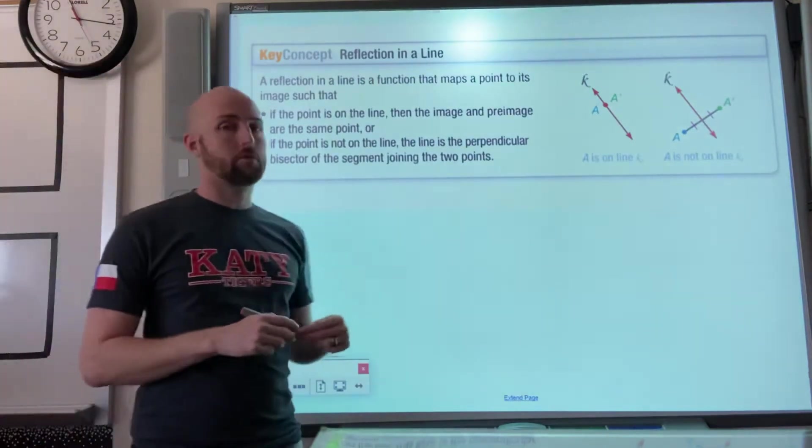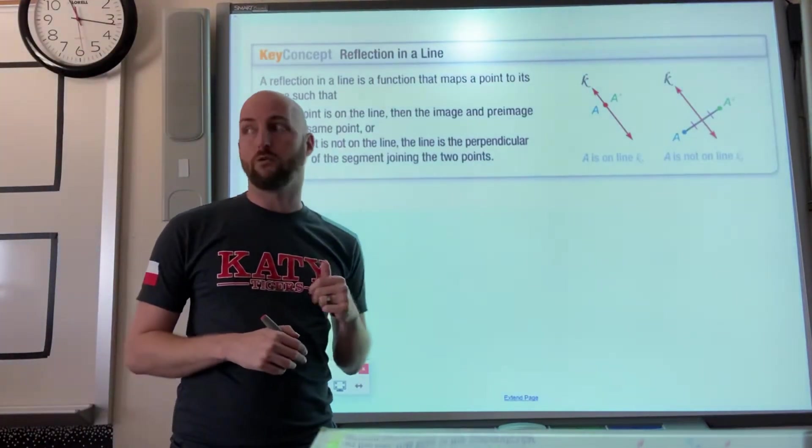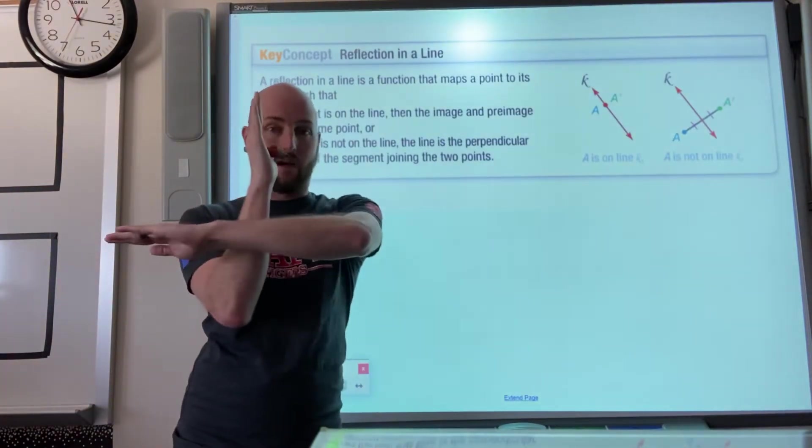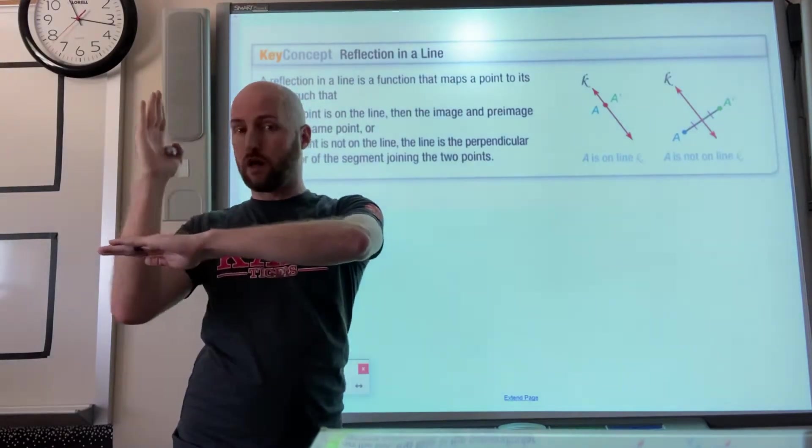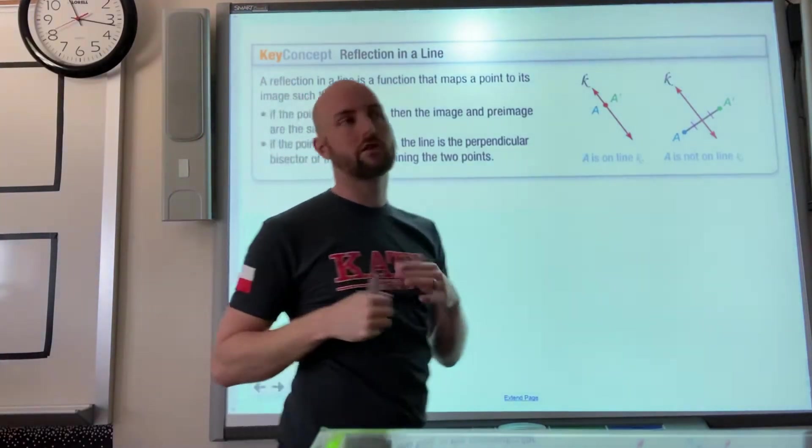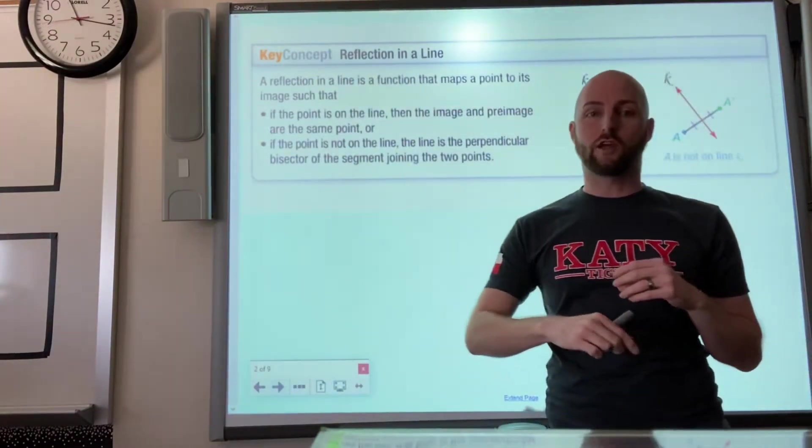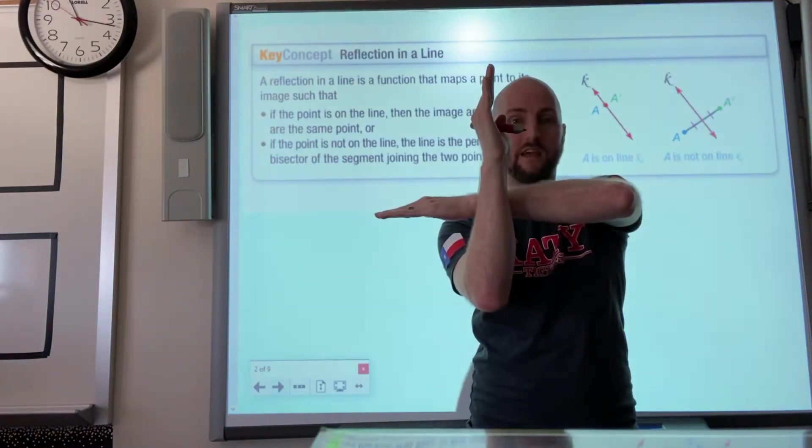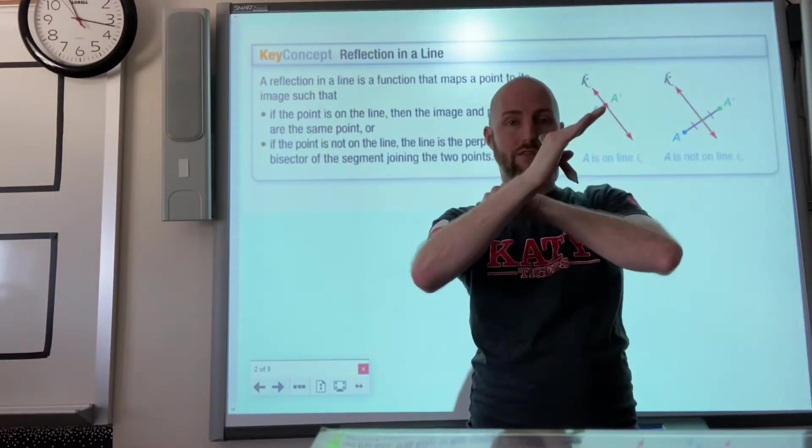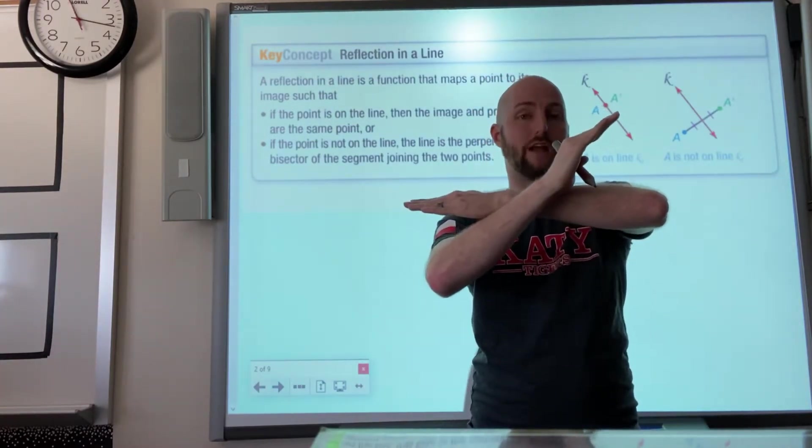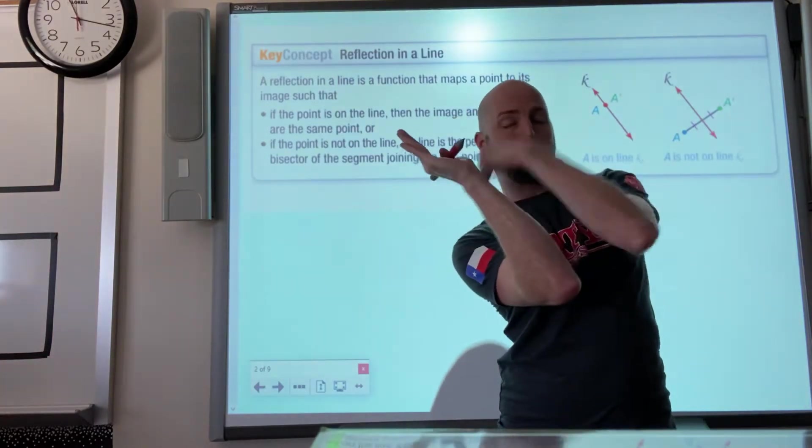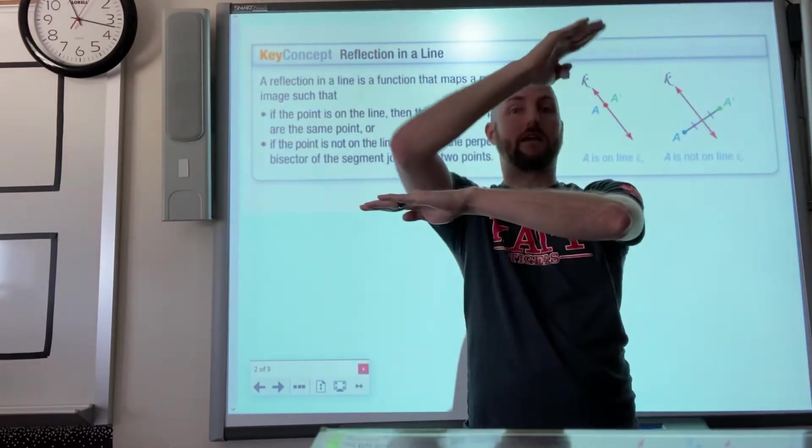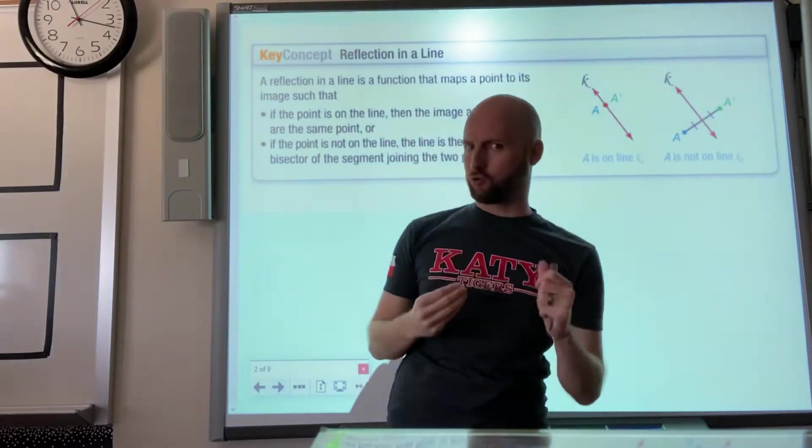All right, so reflections. We're basically going to be reflecting over specific lines. Those lines could be things like the y-axis line, the x-axis line, a different vertical or horizontal line. Also in this class we'll reflect over the perfect diagonals, like y equals x and y equals negative x. But we are not going to flip over a random line in space because it does get a little bit more tricky.